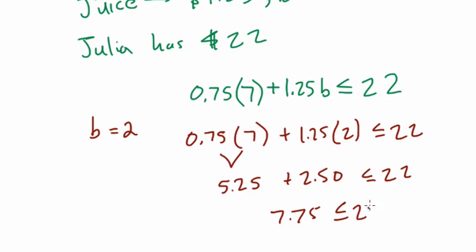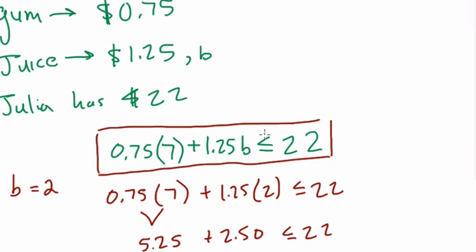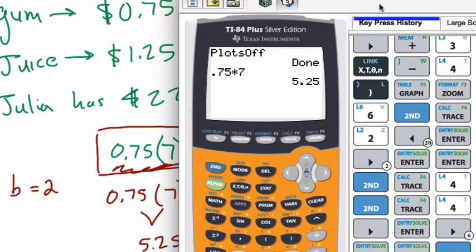And if you want to find the maximum number of bottles of juice, you can just isolate B here. That would look something like this. $1.25 times B is less than or equal to 22 minus 5.25, right? I subtracted this term from the left side. Then I divide everything by $1.25, and what do we get?